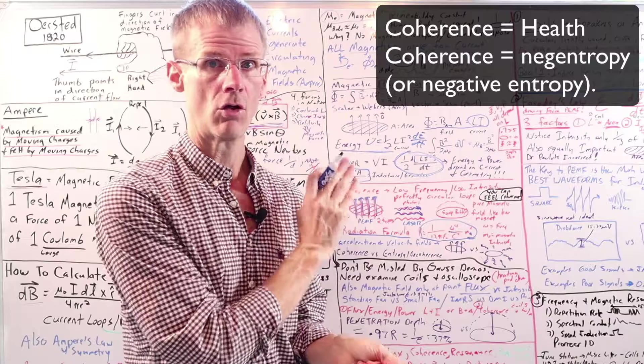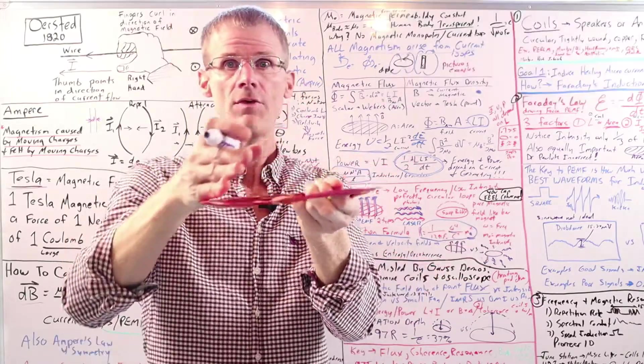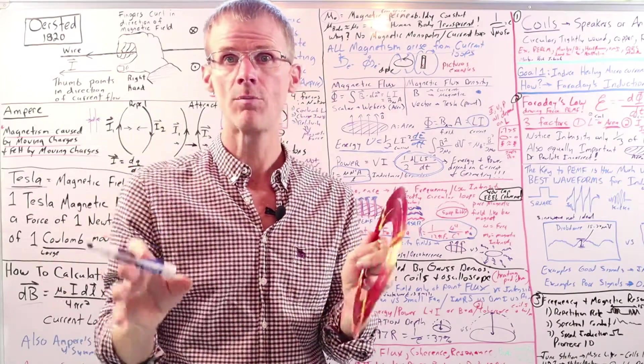So we don't want entropic types of energy. We want coherent energy. Coherence is health. Coherence is syntropy or negative entropy. In fact, it's actually like a pure magnetic field that's able to ripple. And I use a soap bubble analogy.